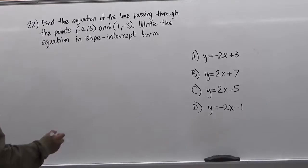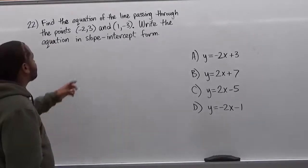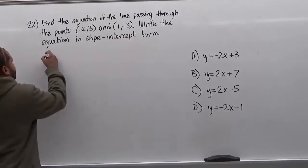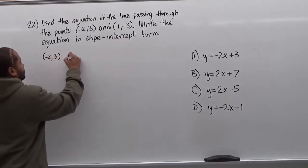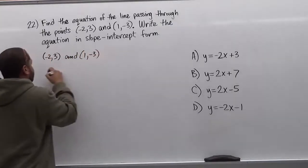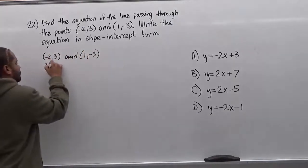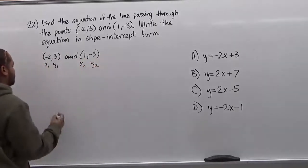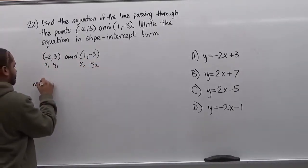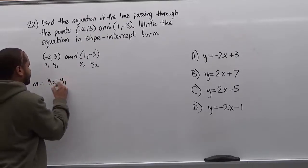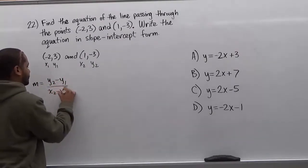The first thing we're going to do here is to find the slope. To find the slope, we're going to take these two coordinates and label them. So here we have negative 2 and 3, and 1 and negative 3. We're going to label these x1, y1, x2, and y2. The slope equation is m equals y2 minus y1 over x2 minus x1.